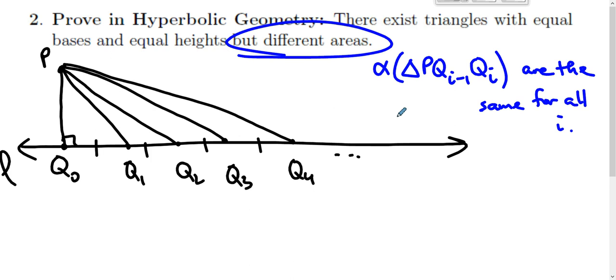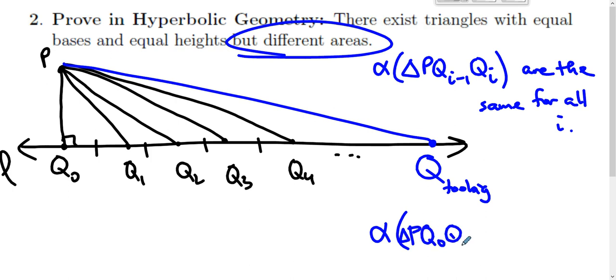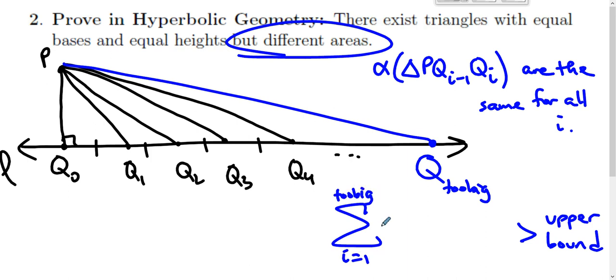Well, eventually you string all of these together. Areas are additive. Eventually you reach a place, let's call it Q to big, where the sum from one to two big, the sum of the areas of those little triangles, is greater than the upper bound.